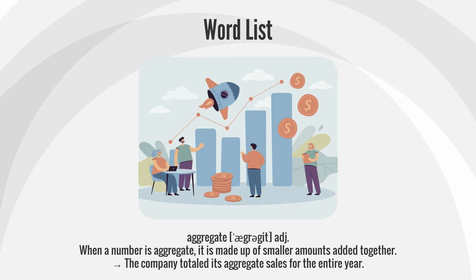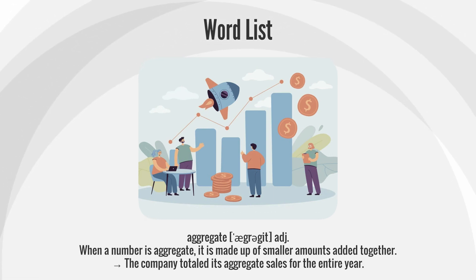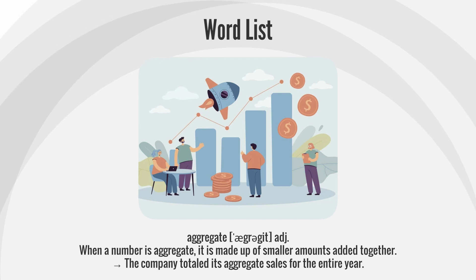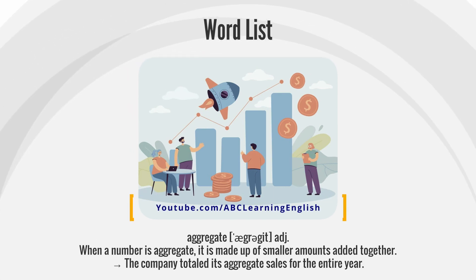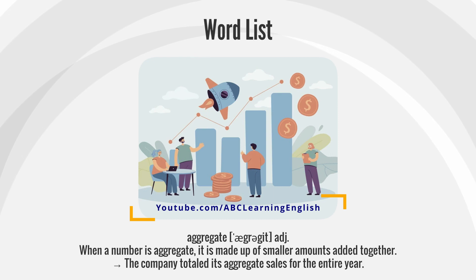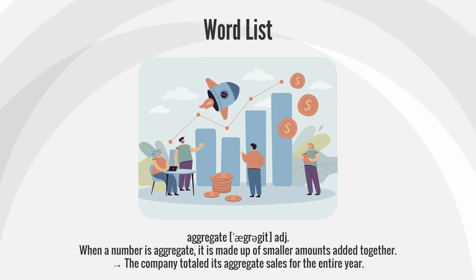Aggregate. When a number is aggregate, it is made up of smaller amounts added together. The company totaled its aggregate sales for the entire year.